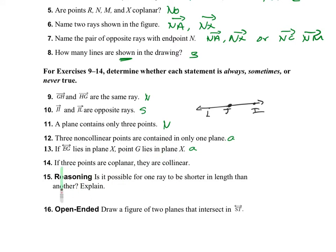If three points are collinear, are they coplanar? This is sometimes. We can have three collinear points that are coplanar, but it's not guaranteed — for example, if I have a plane with one point here, one point here, one point there, they may not be collinear, but they are coplanar.